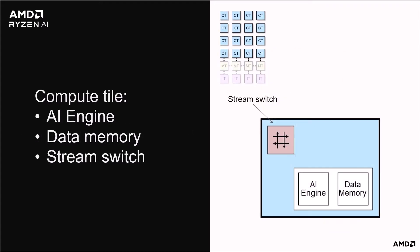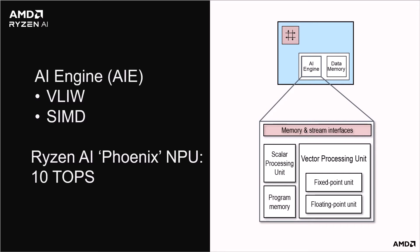Each compute tile contains a processor called AI engine that is optimized for machine learning. It has its own local program memory, separate data memory, and a switch for streaming data connections with the other tiles in the NPU. The AI engine is a very long instruction word or VLIW processor. It is also a single instruction multiple data or SIMD architecture. It has a program memory, a scalar processing unit used for local program control, and a vector processing unit. Machine learning computation is done by the vector unit, which has fixed point and floating point subsystems that support ML data types including INT4, INT8, INT16 and BF16. The cores do not have nor need interrupts, which makes these cores deterministic, which is really important for real-time performance. Each core is capable of 0.5 TOPS. The current generation Ryzen AI NPU array with 20 compute tiles provides 10 TOPS.